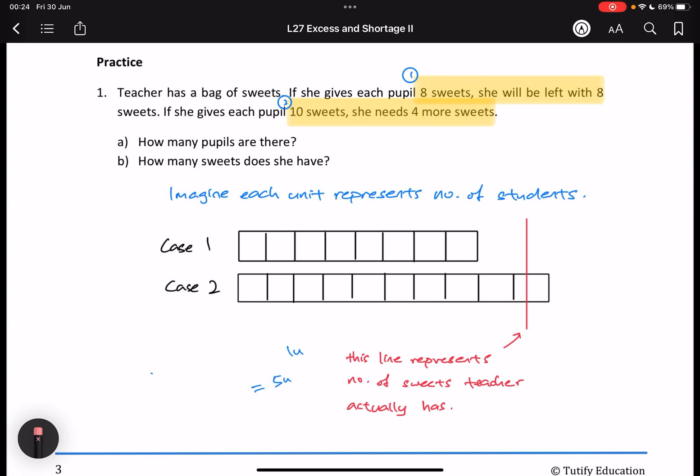Okay, so in scenario number one, they say that each student receives eight sweets. I'll need eight units of sweets. Right, then in scenario number two,